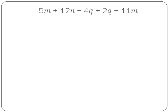Our next example. In this example we have M terms, we have 1N term, and we have 2Q terms. So we are looking first at our M terms. 5M minus 11M will give us minus 6M.